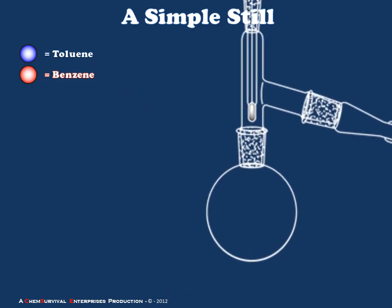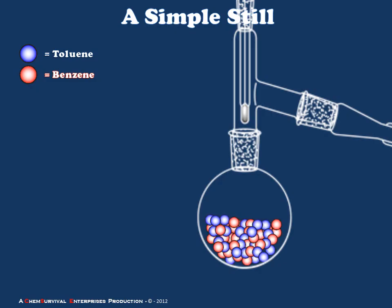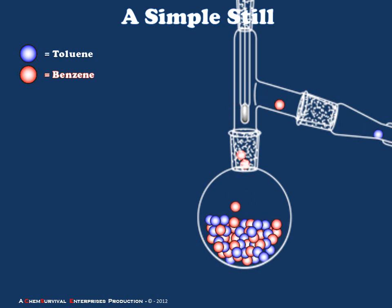If we place our liquid mixture into the boiling flask and heat it, the vapor will begin to form at a ratio of 80% benzene to 20% toluene. However, because we have the still head attached, instead of simply escaping, the vapor is now diverted into the west condenser where it can be collected. You'll notice that only about one in five molecules escaping the boiling liquid is toluene, whereas one in two molecules in the boiling liquid is toluene.